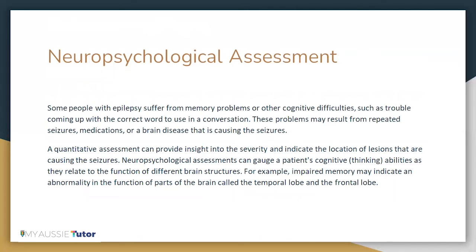These problems may result from repeated seizures, medications, or a brain disease that is causing the seizures. A quantitative assessment can provide insight into the severity and indicate the location of lesions causing the seizures. Neuropsychological assessments can gauge a patient's cognitive thinking abilities as they relate to the function of different brain structures. For example, impaired memory might indicate an abnormality in the function of the temporal lobe and the frontal lobe.